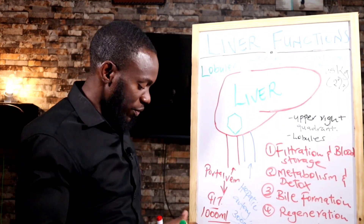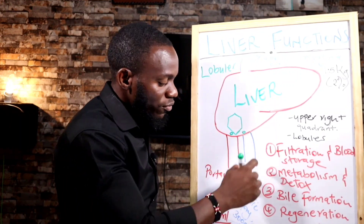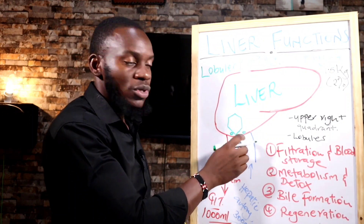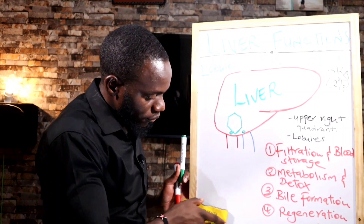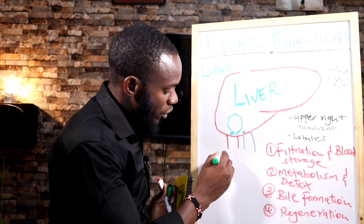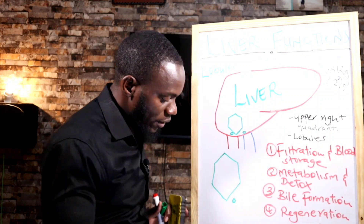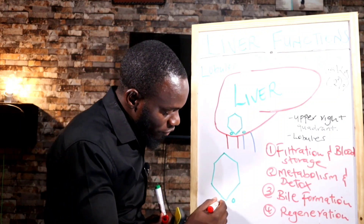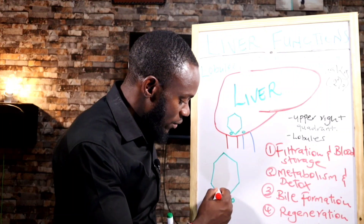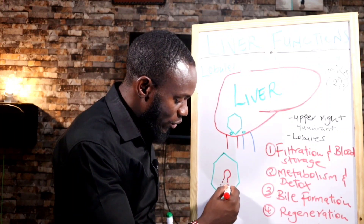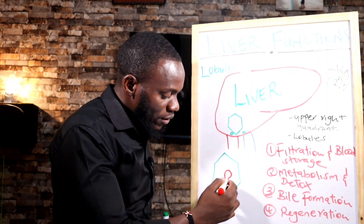Below every lobule, there are two entrances — one for the portal vein and one for the hepatic artery. Blood gets into the lobules through these two. Inside the lobule, we have something called the sinusoid. The sinusoid takes this blood all the way to the central vein. This sinusoid has spaces and perforations, and in these perforations we have cells called Kupffer cells.